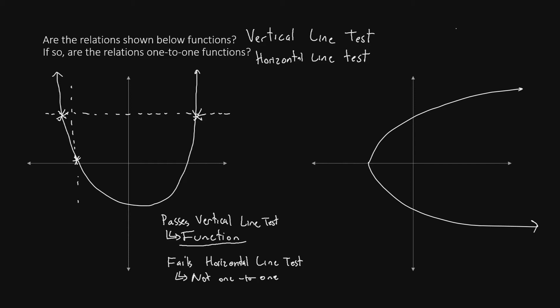Let's try this again with the graph on the right. If we attempt to draw a vertical line, there are many places on this graph where it would cross through twice. The vertical line drawn crosses once on the top and again on the bottom. Therefore this fails the vertical line test, and this relation on the right is not a function at all. Because it's not a function, it is impossible for it to be one-to-one.